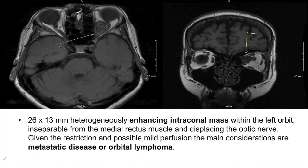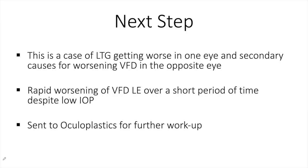The dramatic increase in visual field defect on the left-hand side prompted ordering of imaging, and the patient was found to have an enhancing intraconal mass within the left orbit, thought to be either metastatic disease or orbital lymphoma by the reading radiologist. This is a case of LTG getting worse in one eye with secondary causes for worsening visual field defect in the opposite eye. Rapid worsening over a short period prompted the MRI, and the patient was sent to oculoplastics for further workup.